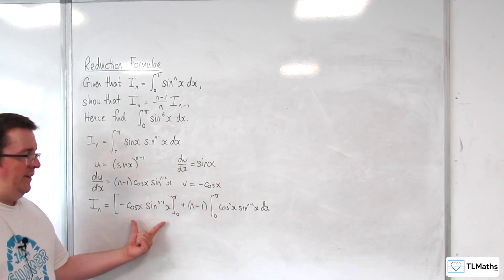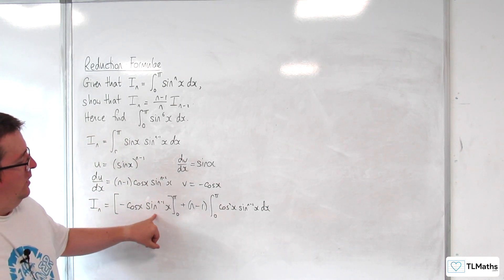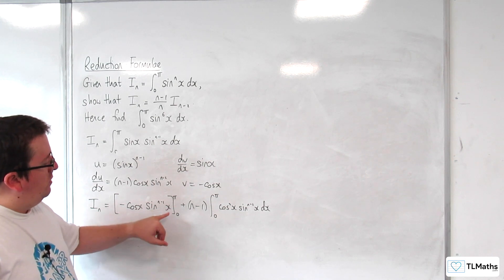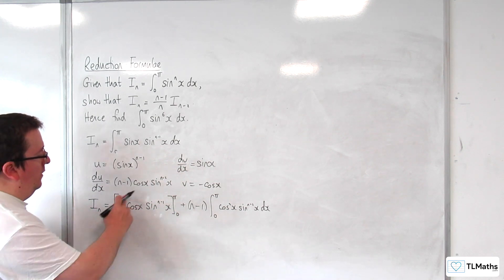Now evaluating this, when I substitute in π, I'm going to get sin(π), which is 0. So that would be 0. Substitute in 0, I'll get 0 again. So all of that is 0.